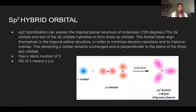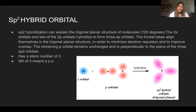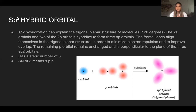With an SP² hybrid orbital, it explains the trigonal planar structure of molecules, making 120 degrees. The S orbital and two of the P orbitals hybridize to form three SP² orbitals. The frontal lobes align themselves in the trigonal planar structure to minimize electron repulsion and improve overlap. The remaining P orbital stays unchanged and is perpendicular to the plane of the three SP² orbitals. SP² hybrid orbitals have a steric number of three, filling the S, P, and P orbitals.